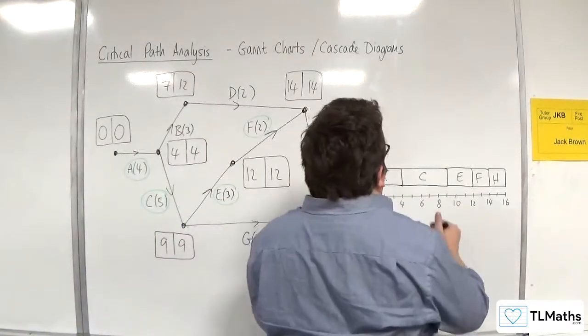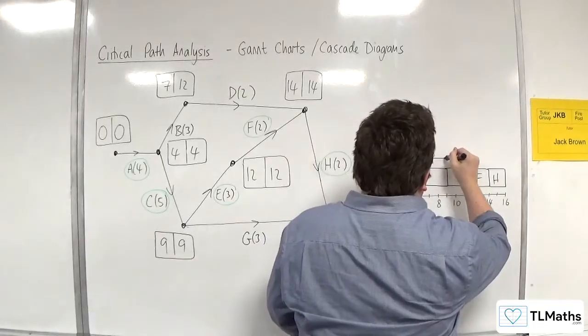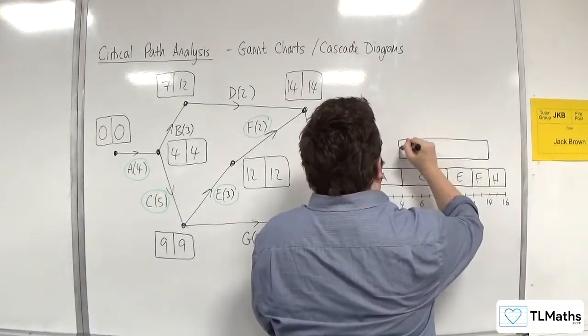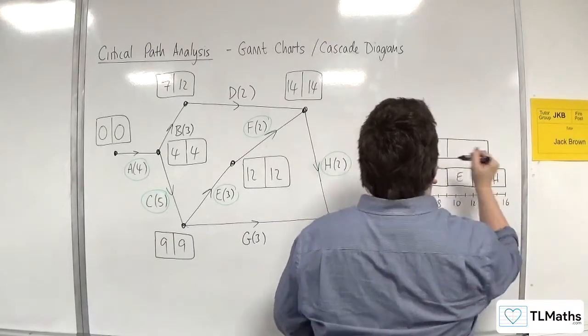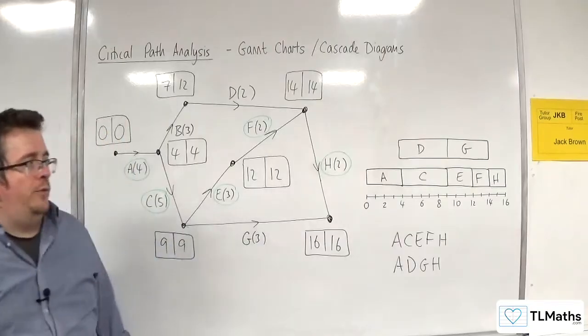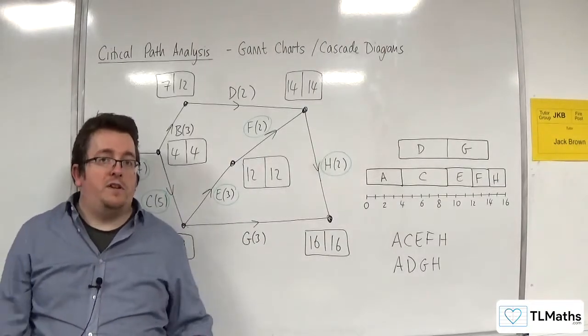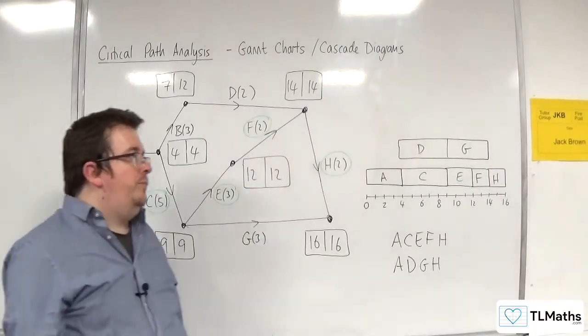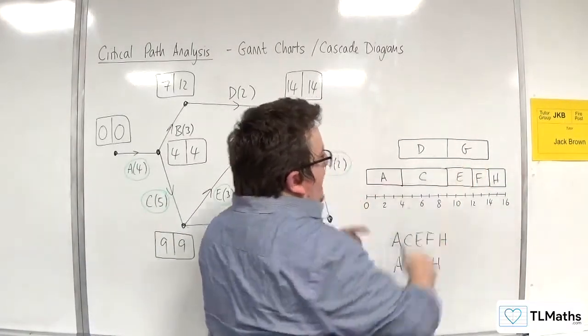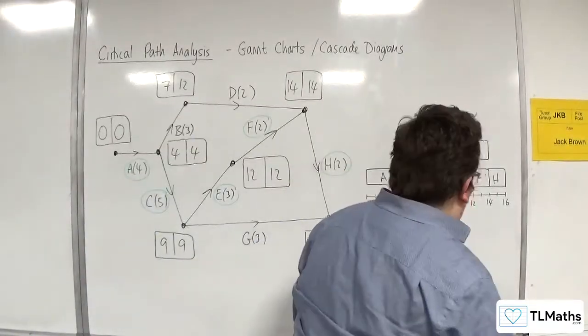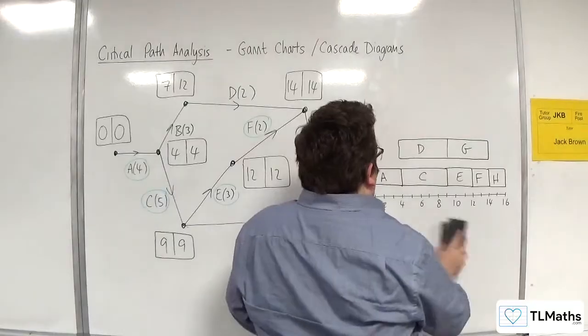So it's representing that D and G are critical because they are together, but you won't redraw A and H. That's how you can represent two critical paths on the same Gantt chart.